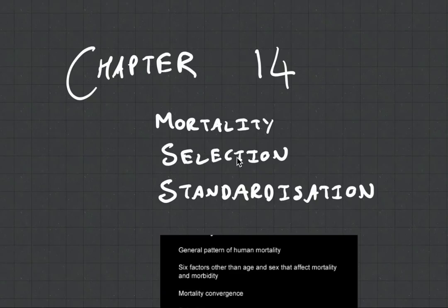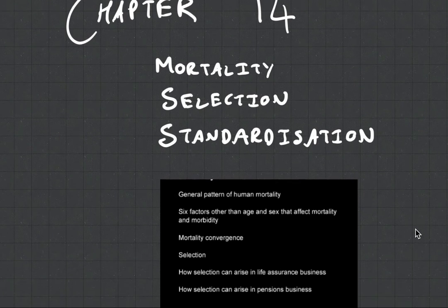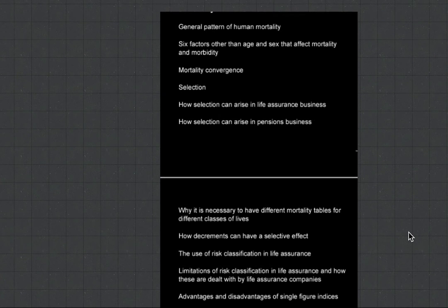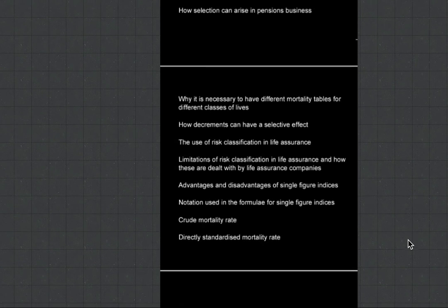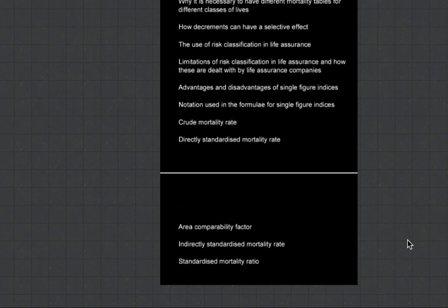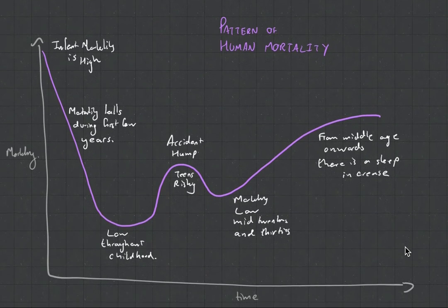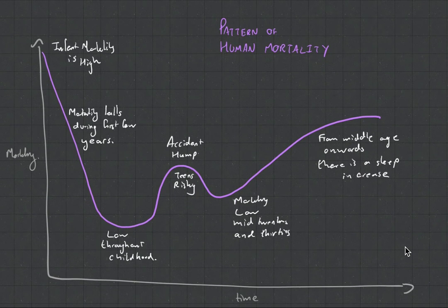Hey guys, it's MJ the Student Actuary and we're talking CT5 Chapter 4. In this video we're going to be looking at mortality. I'm going to make other videos about selection and standardization because there is quite a lot of content in this final chapter. So we're going to have separate videos, and in this one we're going to talk about mortality — where better to start than with the pattern of human mortality.